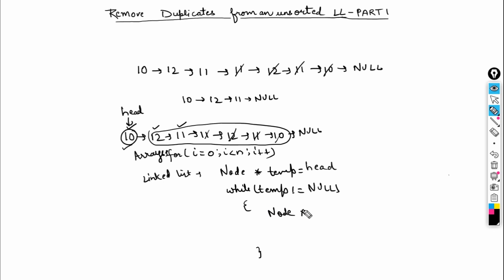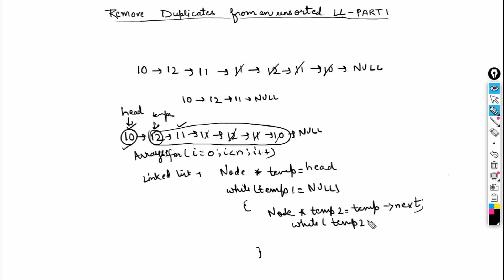I can have one more pointer — say node* temp2 — which should start from the immediate next node, so temp2 = temp->next. Then iterate using: while temp2 is not equal to null, check if the data is equal and remove the node; else do temp2 = temp2->next.